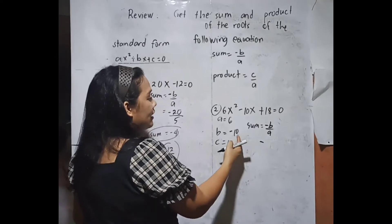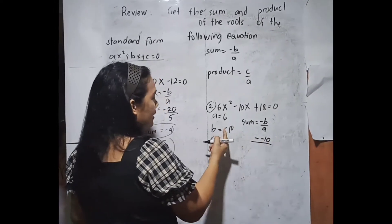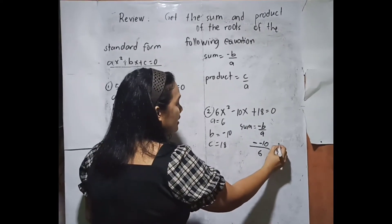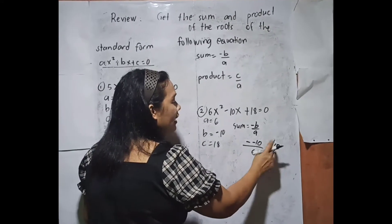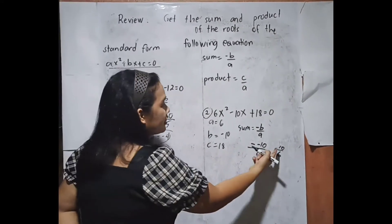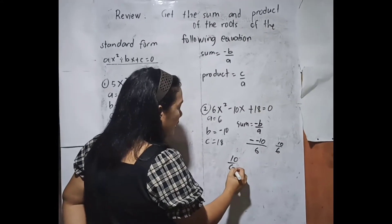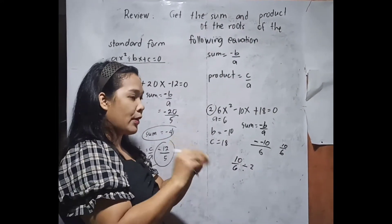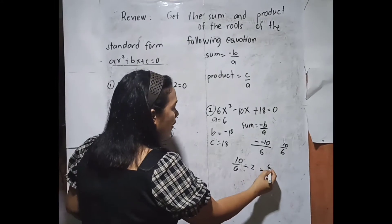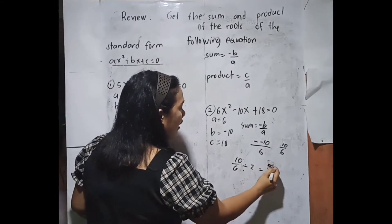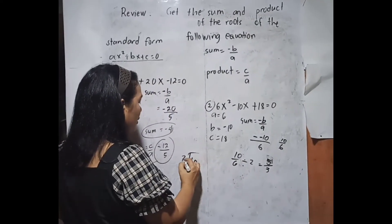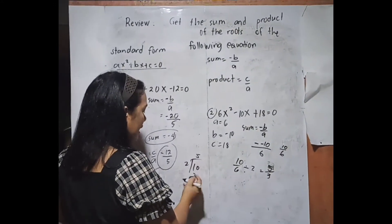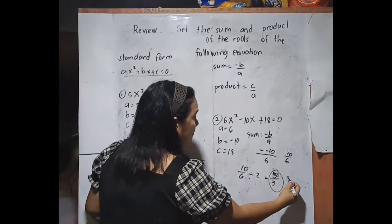We place the negative sign, and yung b natin is negative 10 and yung a natin is 6. Itong dalawa, babaguhin natin — magiging positive 10 over 6. Then we simplify to lowest terms: 10 divided by 2 is 5, and 6 divided by 2 is 3. So our sum is 5 over 3.